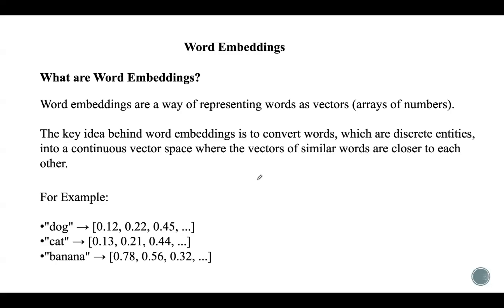In this lecture, let us discuss about word embeddings, which are a type of representation for text where words or phrases from the vocabulary are mapped to vectors of real numbers in a continuous vector space. These embeddings allow machines to understand and process the relationships between words based on their meanings, instead of treating each word as a discrete isolated token.